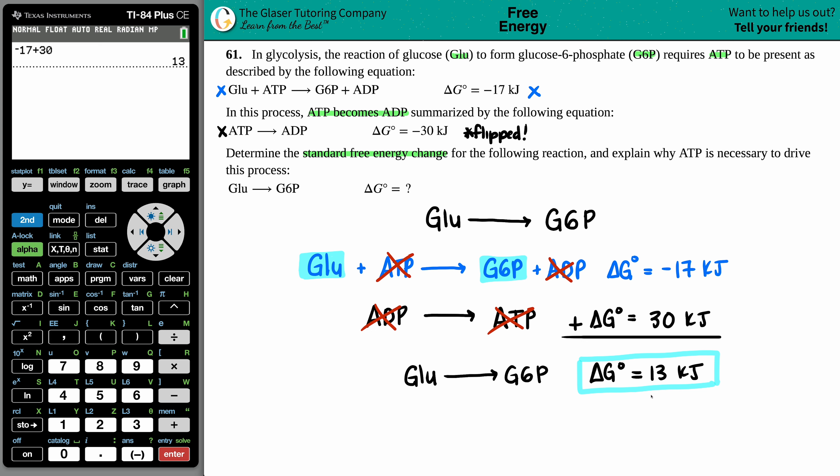And that is the answer to the actual determine the standard free energy change. Standard free energy is 13 kilojoules. But now the last thing we have to do is just explain why ATP is necessary to drive this process. Well, it seems that if we don't have ATP, right, this would be basically if we didn't use any energy, aka the ATP. If we just wanted to perform this by itself, it's saying that it's going to be 13 kilojoules. But remember, a delta G that's a positive value, which is what this is, is non-spontaneous.